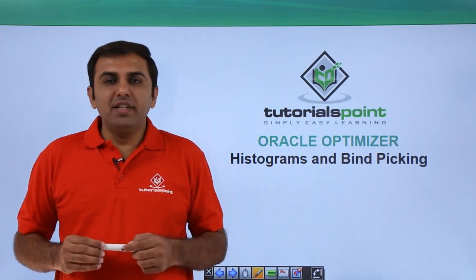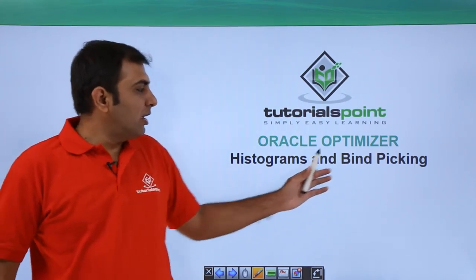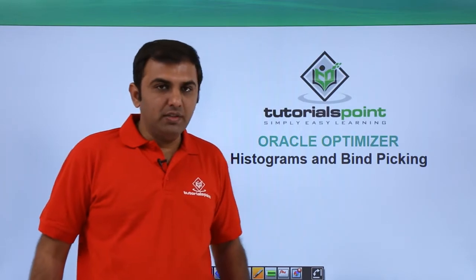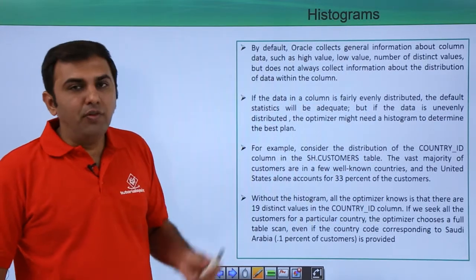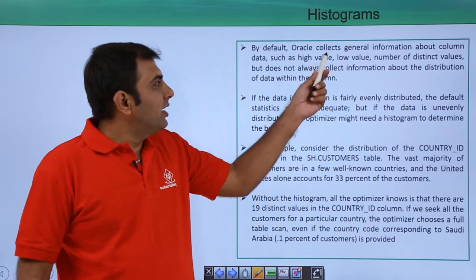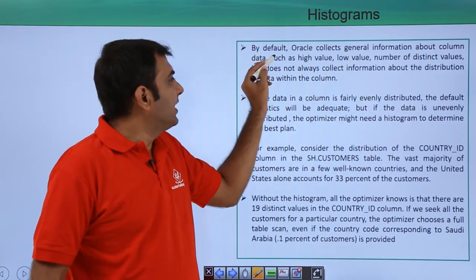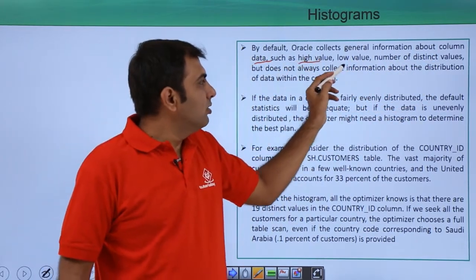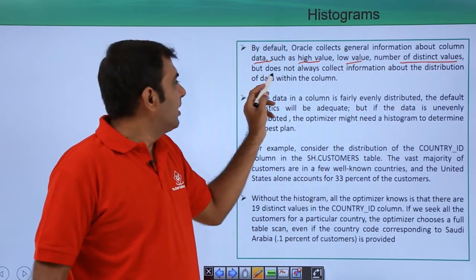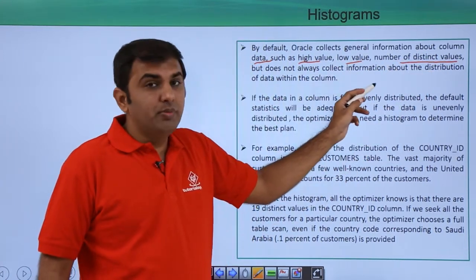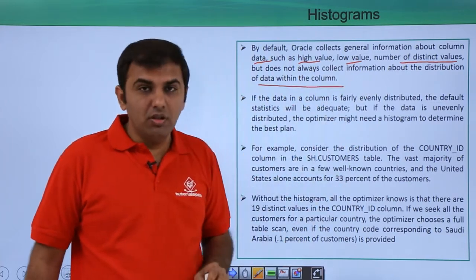Hello friends. In this session we are going to discuss about Oracle Optimizer Histogram and Bind Peeking. First of all we are going to see the Histogram. By default Oracle collects general information about column data such as a high value, low value, and number of distinct values, but does not always collect information about the distribution of data within the column.